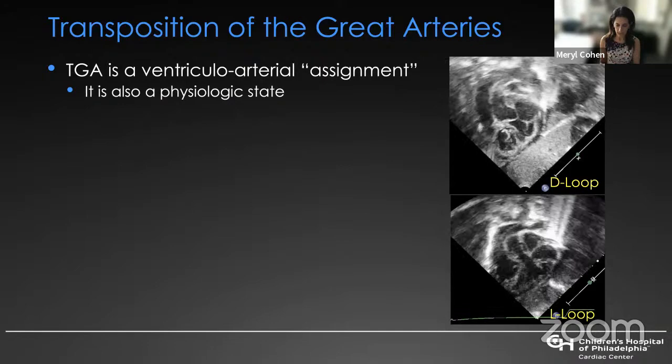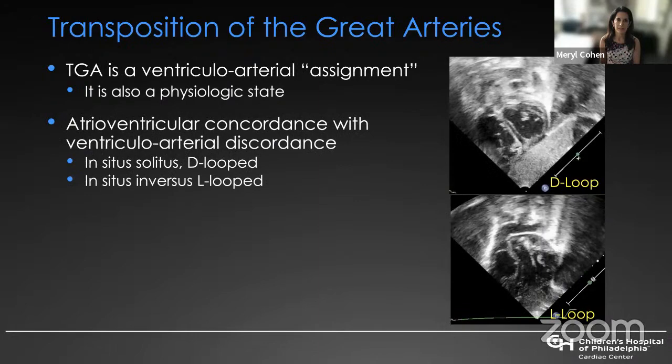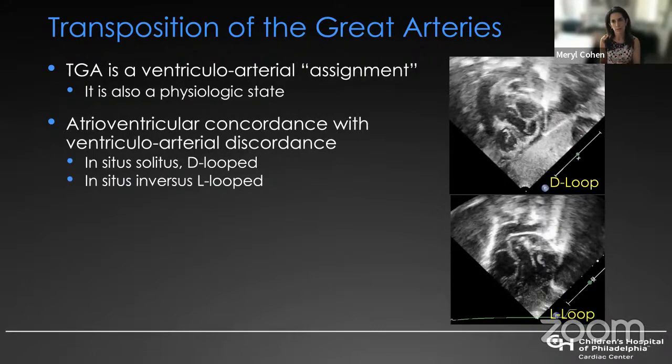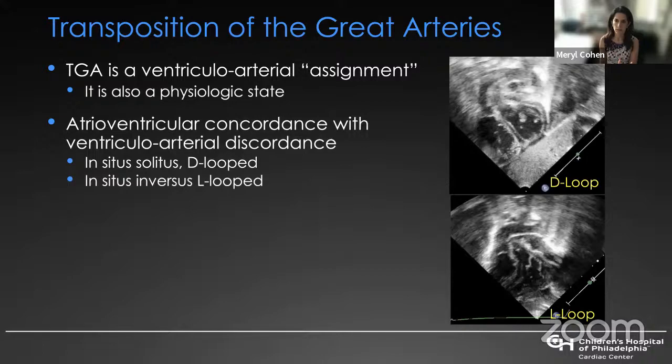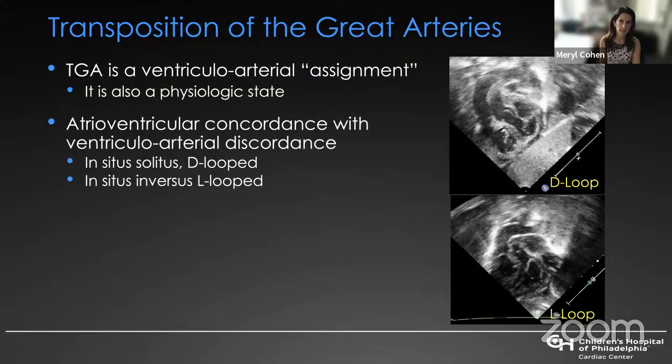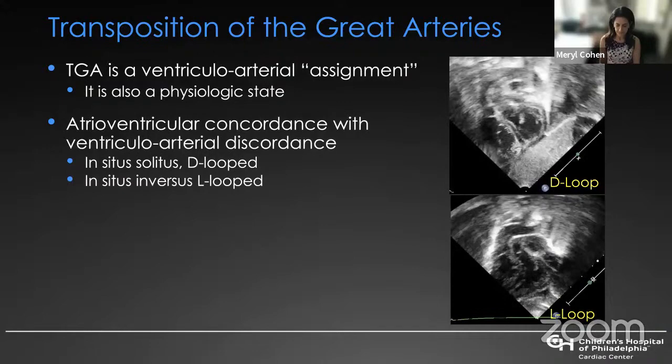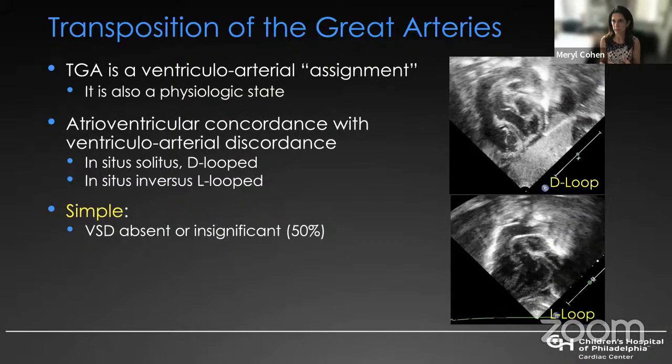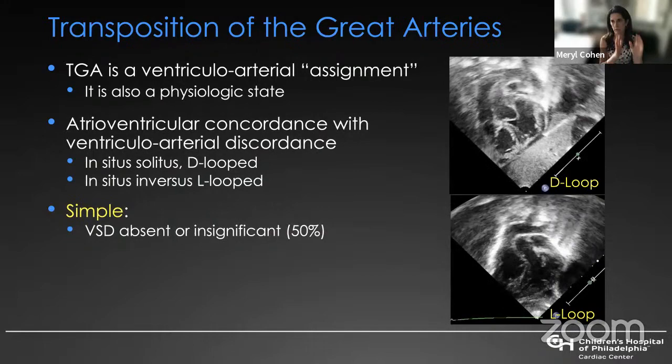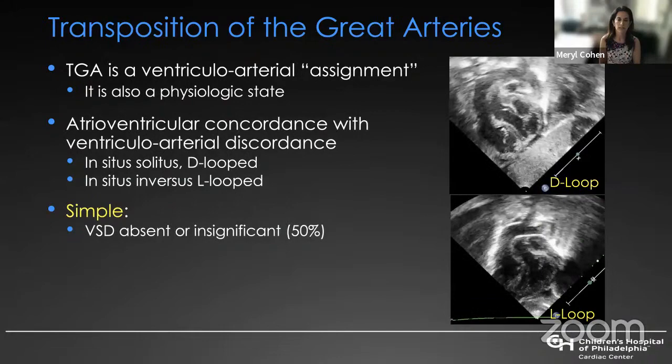When we talk about transposition of the great arteries, it's a ventricular arterial assignment. I like to use the word assignment rather than alignment, because sometimes it's quite challenging to determine which ventricle a great artery is coming from. What's somewhat unique about transposition, in contrast to other anomalies like double outlet, is that transposition is also a physiologic state — an anatomic reality as well as a physiologic state. In Andersonian terms, it is atrioventricular concordance with ventricular arterial discordance.